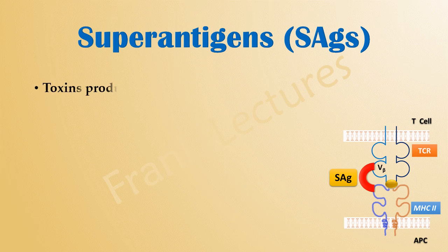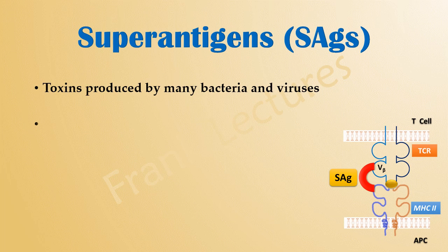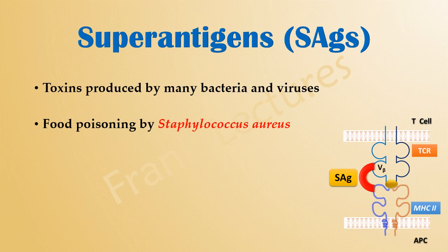Superantigens are actually toxins produced by many pathogenic bacteria and viruses. A well-known superantigen disease is food poisoning by Staphylococcus aureus. Food poisoning is caused by staphylococcal enterotoxin and is characterized by fever, vomiting, and diarrhea. Staphylococcus aureus also produces the superantigen responsible for toxic shock syndrome.